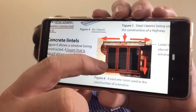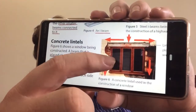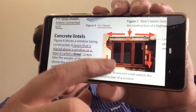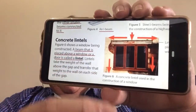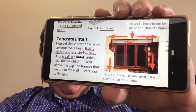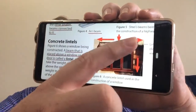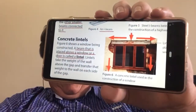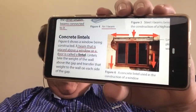We don't get broken glass, and that's the windowsill at the bottom. So that lintel takes all the weight and then transfers it to the wall on either side of the window.